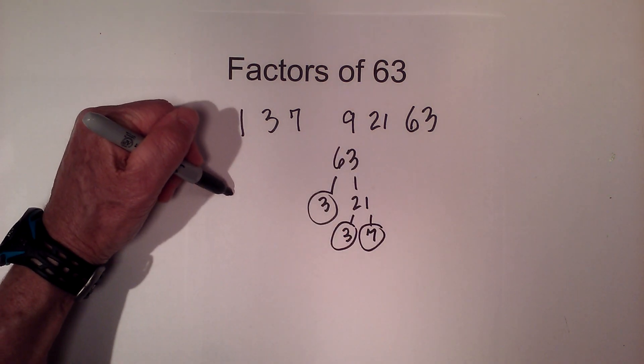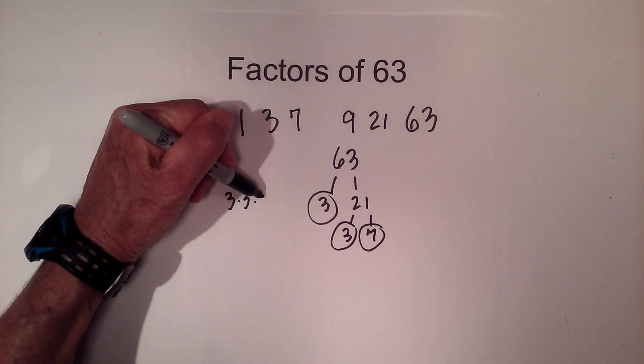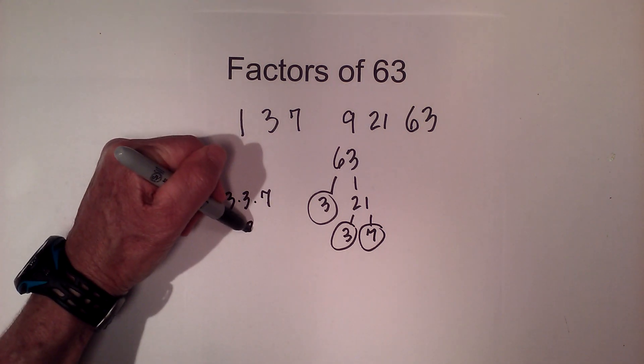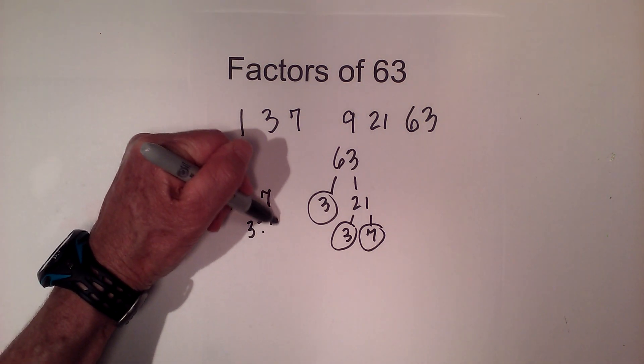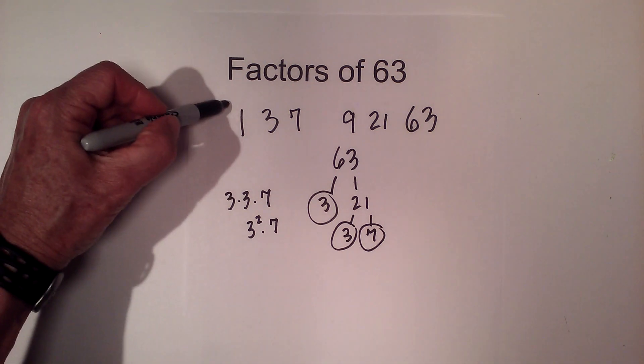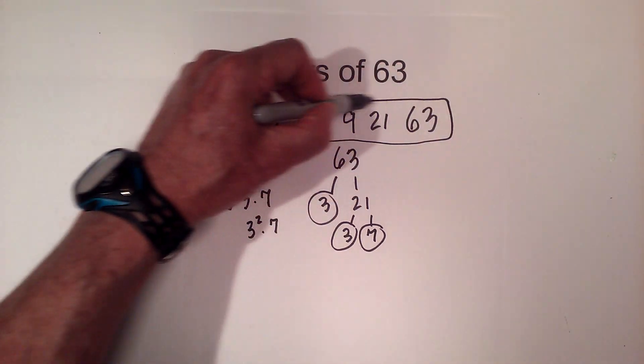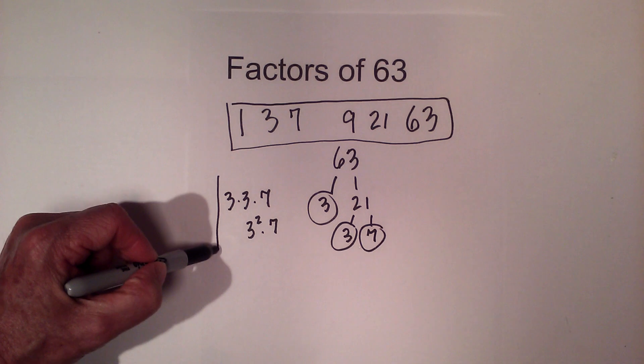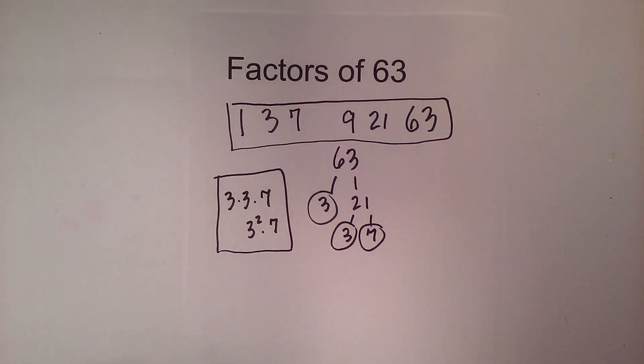So the prime factors are 3 times 3 times 7, or 3 squared times 7. There we go, here are all the factors of 63 and here are the prime factorization of 63.